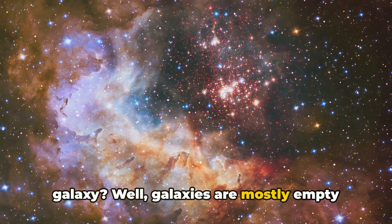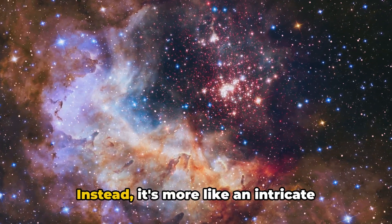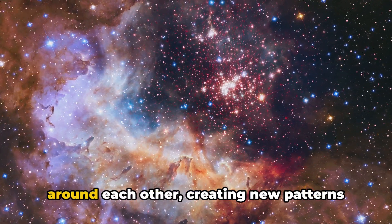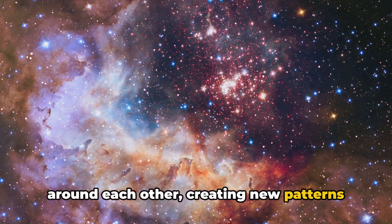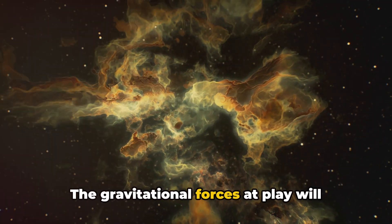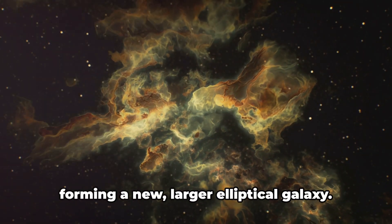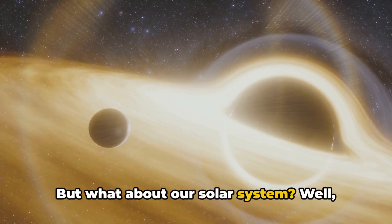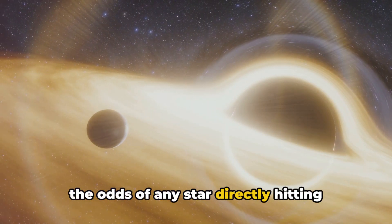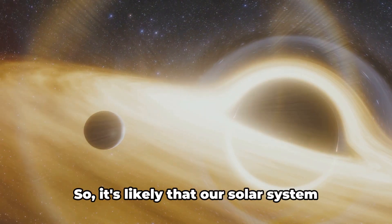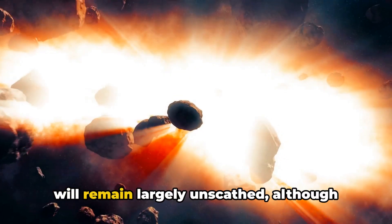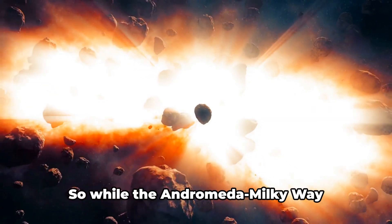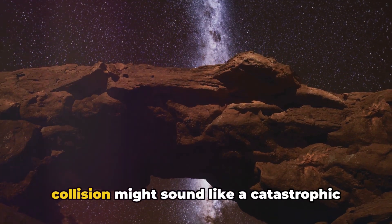Well, galaxies are mostly empty space, so it's not like two cars crashing head-on. Instead, it's more like an intricate ballet, where stars, gas and dust swirl around each other, creating new patterns in the sky. The gravitational forces at play will cause our galaxies to distort and reshape, forming a new, larger, elliptical galaxy. But what about our solar system? Well, the odds of any star directly hitting another are astronomically low. So it's likely that our solar system will remain largely unscathed, although potentially relocated to a different part of the new galaxy.